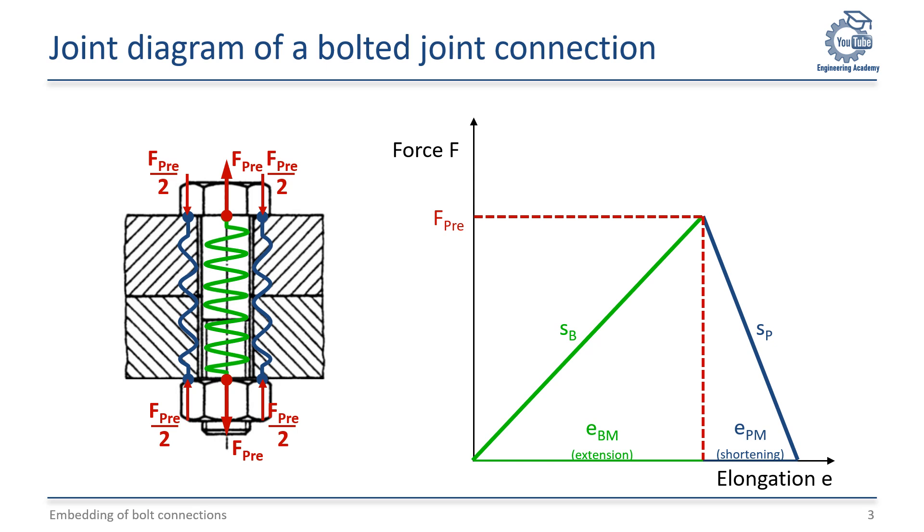When a bolted joint connection is assembled and tightened, after mounting the actual preload force FPRE is present in all components. Since the components are linear elastic, the stiffness SB for the bolt and the stiffness SP for the plates can be used to draw the joint diagram of the bolt connection. In the assembled state, the clamping force FC in the gap between the plates is the assembly preload force FPRE.